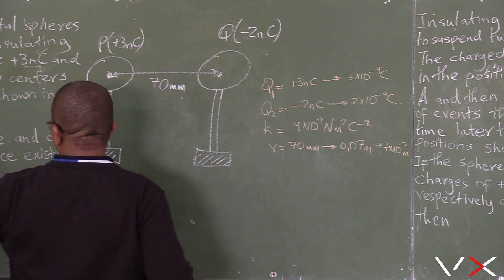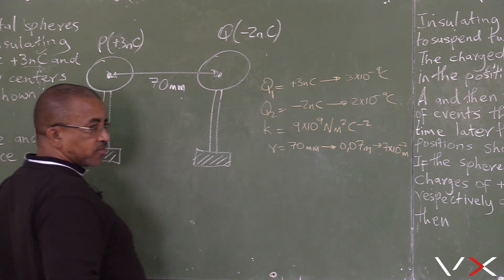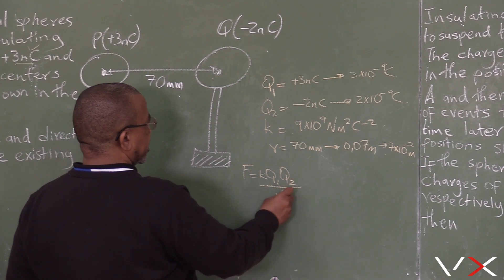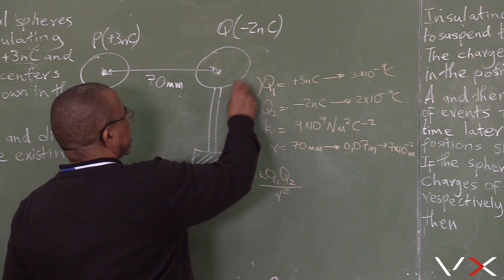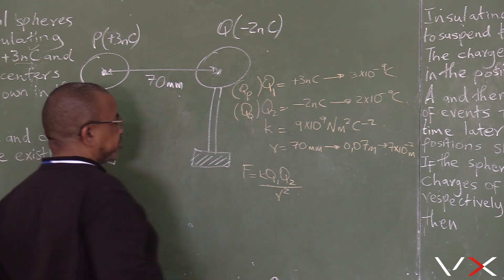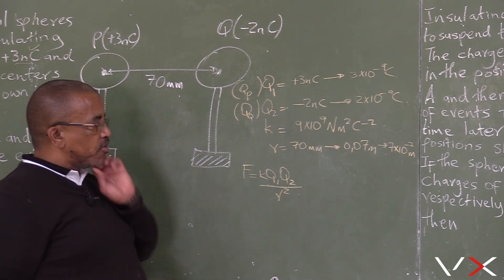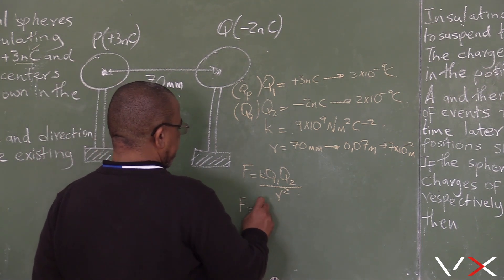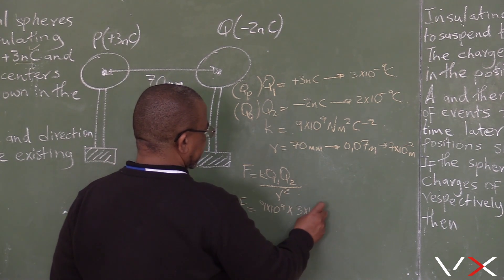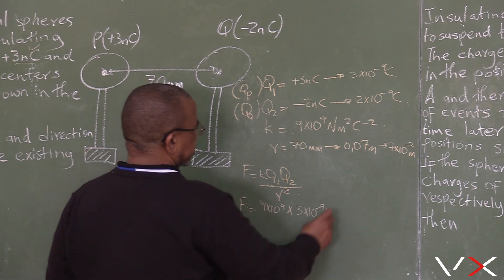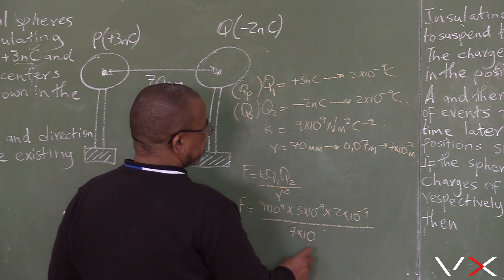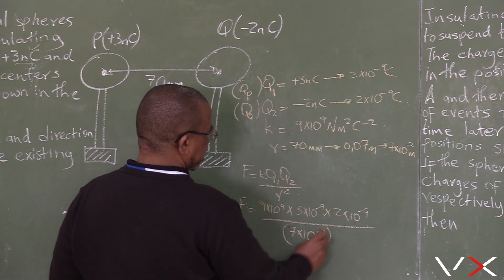They want us to calculate the electrostatic force. The electrostatic force is equal to K times Q1 times Q2 over R squared, where Q1 is represented by the charge of P and Q2 is represented by the charge of Q. Substituting: F = 9 times 10 to the power 9, times 3 times 10 to the power minus 9, times 2 times 10 to the power minus 9, all over 7 times 10 to the power minus 2, all squared.